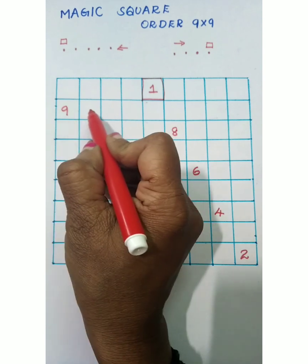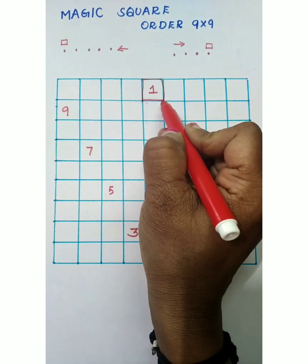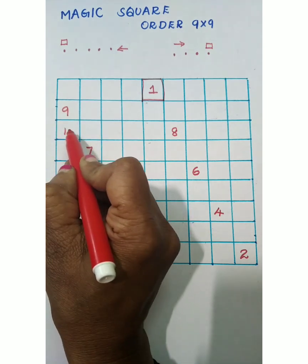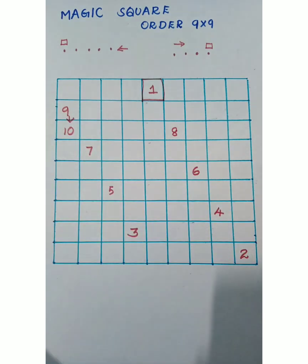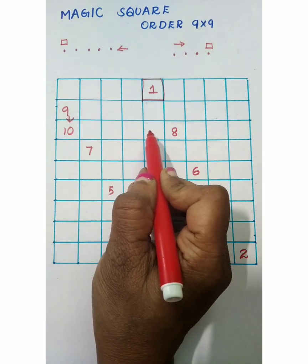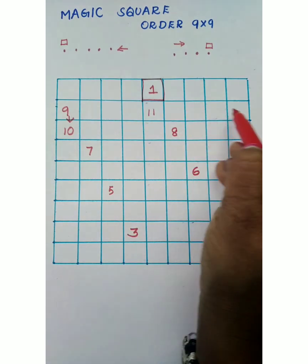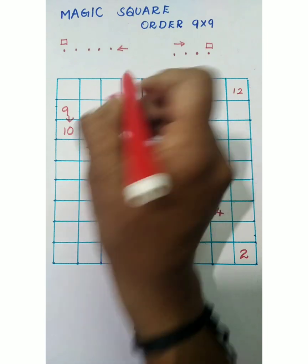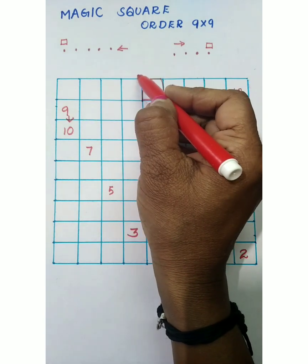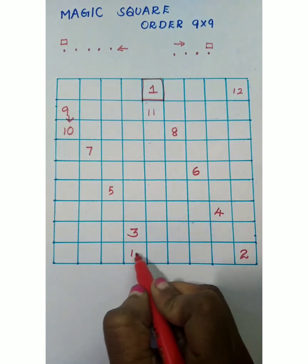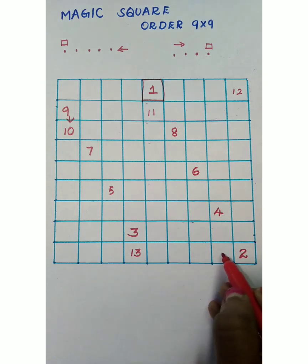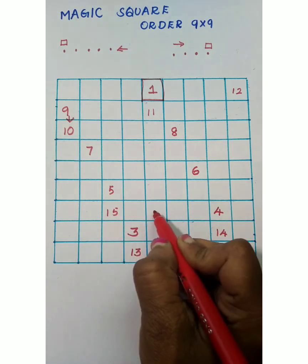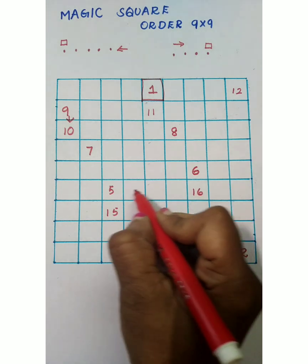Move right for digit 10: one, two, three, four — but this box is already filled, so go right just below that last digit and mark 10 there. Move right for 11: one, two, three, four. Move right for 12: one, two, three, four. For 13 there is no place, so go to the column end and mark 13. Continue: 14 — one, two, three, four; 15 — one, two, three, four; 16 — one, two, three, four, five.